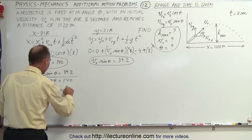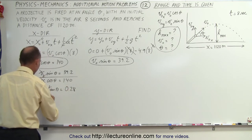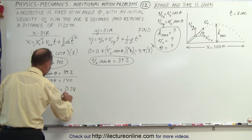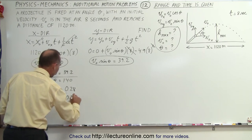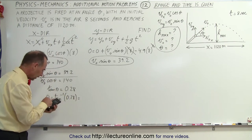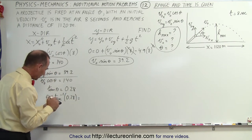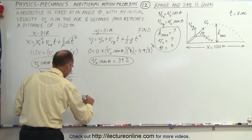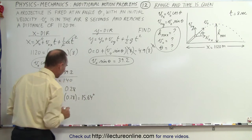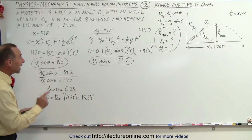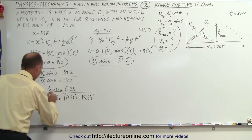That's the tangent of 0.28, which means that theta is equal to the inverse tangent of 0.28, which equals, take the inverse tangent, we get 15.64 degrees. Okay, so now we have the angle. Let's go ahead and circle that.